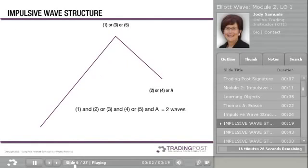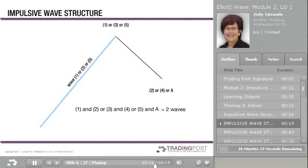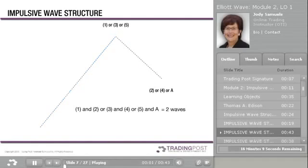Since waves are self-similar, this rising wave can be a wave 1, 3, or 5 in a 5-wave sequence. These are the impulsive waves which move in the direction of the trend. Each impulsive wave, once complete, is followed by a corrective wave. Now you are beginning to see the repetitive nature of the waves that Elliott first described when he looked at the stock market as a fractal.